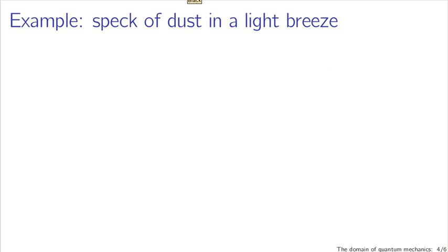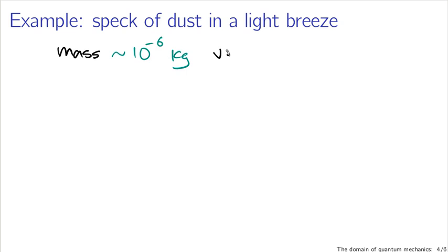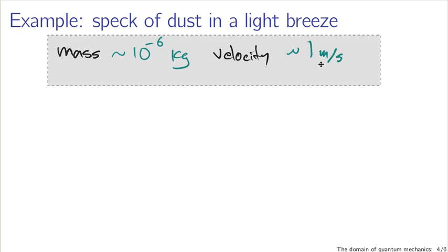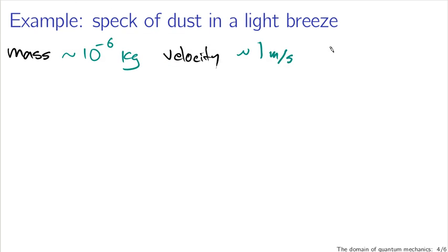As another example of a small object, consider a speck of dust in a light breeze — this one we'd actually have to calculate because it's not obvious whether it's in the quantum or classical regime. From looking up some numbers: the mass of a speck of dust is about 10 to the minus 6 kilograms (a microgram), its velocity in a light breeze is about 1 meter per second, and its size is about 10 to the minus 5 meters.